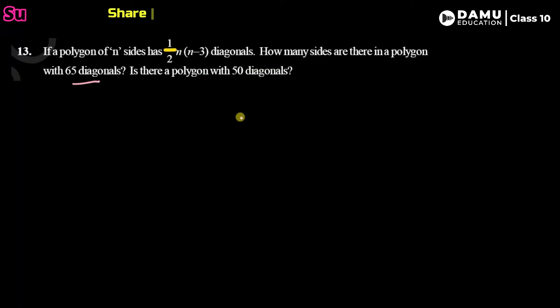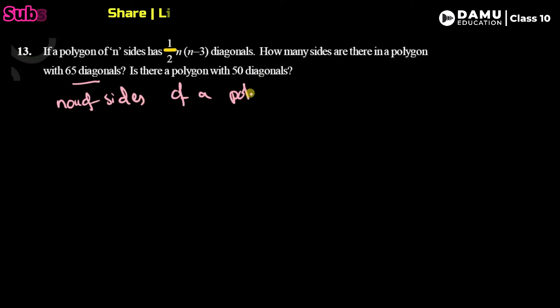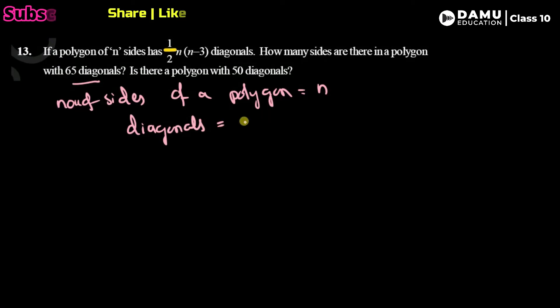For the first part, let's set up our formula. The number of sides of a polygon will be equal to n, and the number of diagonals will be equal to (1/2) × n × (n − 3). This is our diagonal formula.